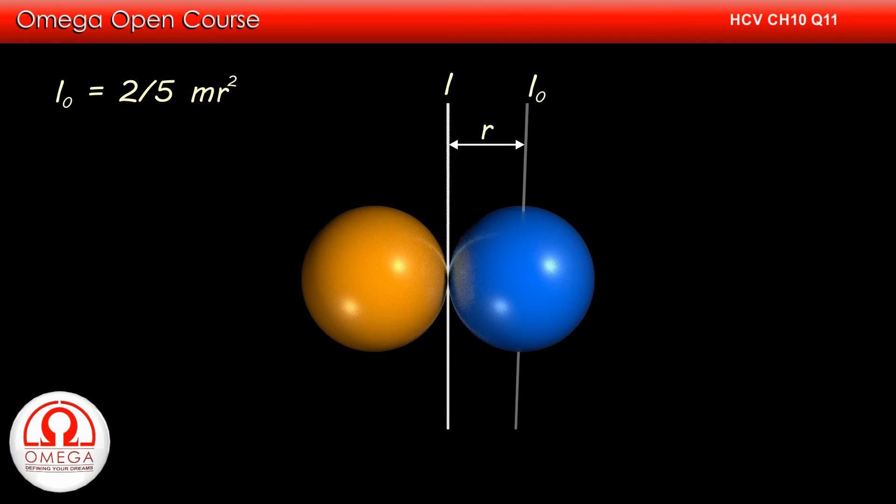The distance between the two axes is r. Since both the axes are parallel, as per the parallel axis theorem, I must be equal to I₀ plus mr².